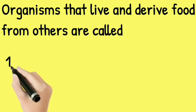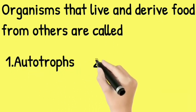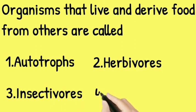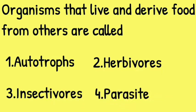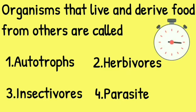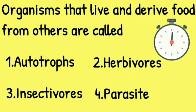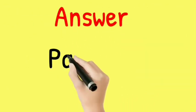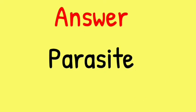Organisms that live and derive food from others are called — the options are: Autotrophs, Herbivores, Insectivores, and Parasite. Your time starts now! The answer for this question is option number 4, which is Parasite.